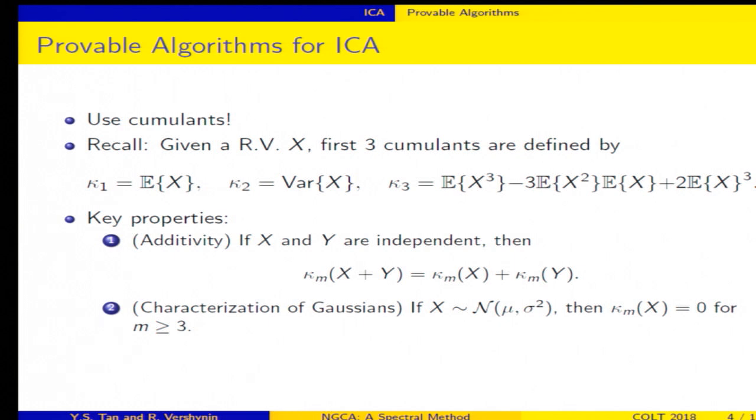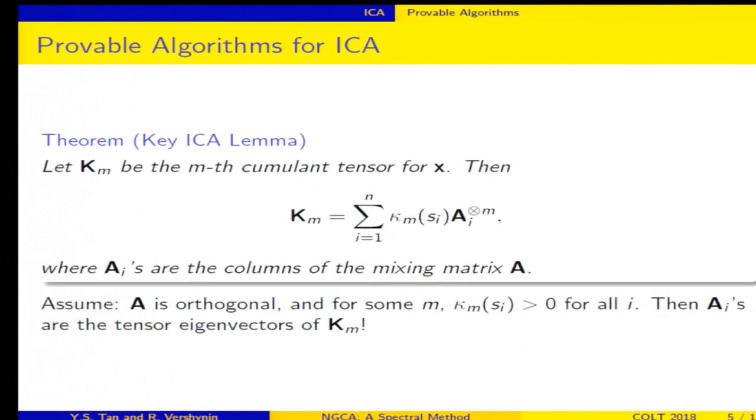Alright, so so far, I've defined cumulants for random variables. You can equally define them for random vectors. However, because random vectors are multi-dimensional objects, cumulants are going to become tensors. Here is the key lemma that is used for analyzing ICA algorithms. Okay, so here's the lemma.